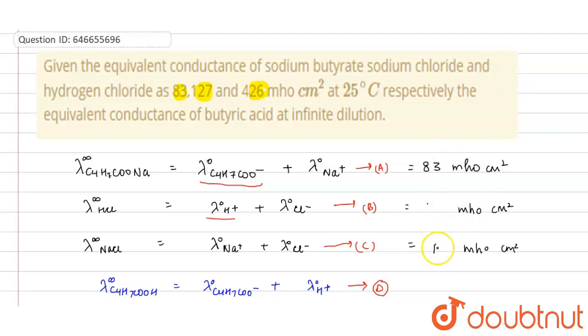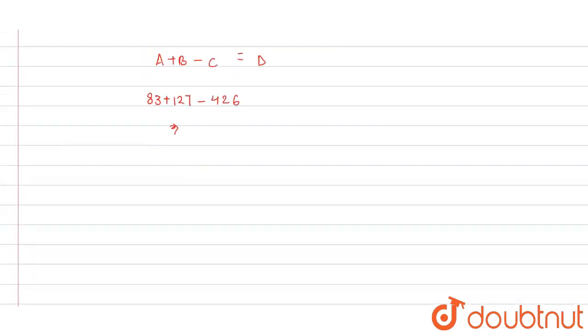Now your value will come positive, so from here I will write 426 minus 127. By solving this, 382 mho centimeter square equivalent inverse. This is your answer.